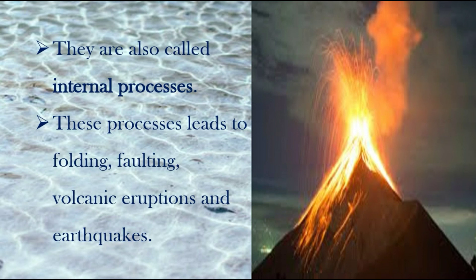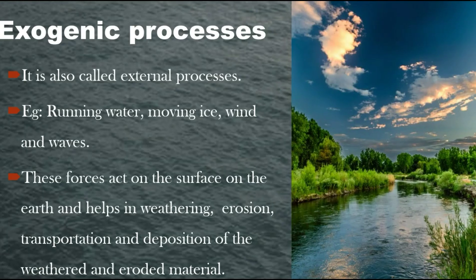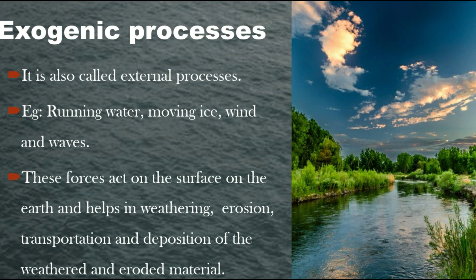Now we are going to see what is exogenic process. The term itself tells us — exogenic means outside or on the surface of the earth. It is also called external process. It happens on the surface of the earth — that is the key difference. It can involve running water, moving ice, wind, or waves — anything like this can be called an exogenic process, and it causes changes on the surface of the earth.